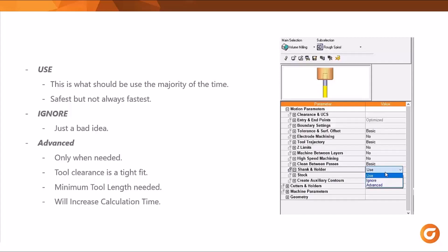Another option you have is 'ignore,' which is just not recommended, but in some cases it does apply. The last option, which is what we're really covering today, is 'advanced.' When you feel the need, or there is an application where the tool simply isn't going to get where you need it to, or maybe you need the minimum length of the tool, we need to switch the shank and holder settings to advanced.